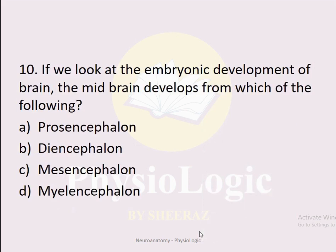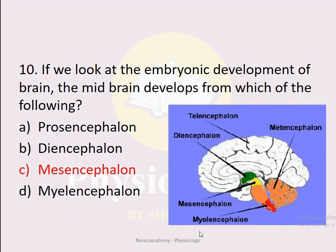MCQ number ten: If we look at the embryonic development of the brain, the midbrain develops from which of the following? Option A: prosencephalon. Option B: diencephalon. Option C: mesencephalon. Option D: myelencephalon. The correct option is C: mesencephalon. You must remember that mesencephalon and midbrain are interlinked.